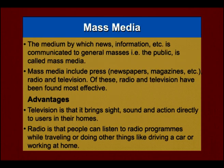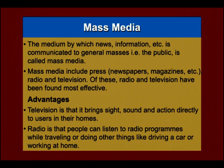Mass media is the medium by which news and information are spread to the public. It includes press, newspapers, magazines, radio and television. There are seven kinds of media. Television with light, sound and action can bring information to the user's home and is extremely interactive, though it is one-way. Radio allows large numbers of people — not only in urban areas but in rural areas too — to listen to academic and other important programs, like those offered by IGNOU, anywhere and anytime.